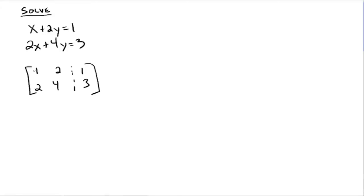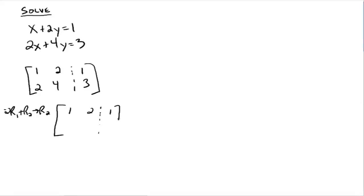You already have a one where you want it, so you want this two to be a zero. Negative two times row one plus row two gives us a new row two. We multiply this one by negative two so when we add it to two, it gives us zero. Row one stays the same, and row two becomes zero. Negative two times two is negative four plus four, which is zero. Negative two times one is negative two plus three, which is one.